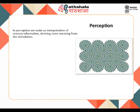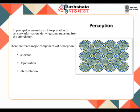In perception, we make an interpretation of sensory information, deriving some meaning from the stimulation. There are three major components of perception: selection, organization, and interpretation. The first step involves the problem of selection — to which stimuli do we attend? Next is to understand the stimuli in relation to one another; some are dominant, others subtle. Then we organize and finally interpret this information.